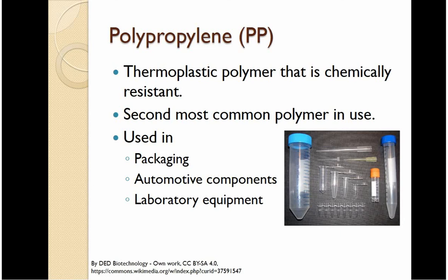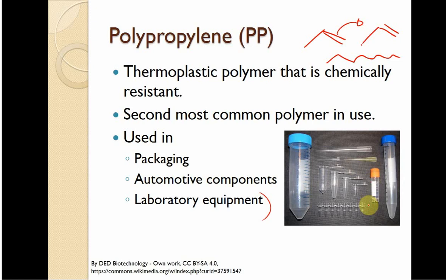Polypropylene is probably the one that is used in labs the most. It's chemically resistant. You have propylene and the double bond comes out and bonds to the next molecule, so you end up getting a really long chain, sometimes with some branching as well. It's the second most common polymer. It can be used as a hard plastic and in lab equipment like centrifuge tubes, test tubes, and pipettes, because it's not going to disintegrate with exposure to acids or bases.